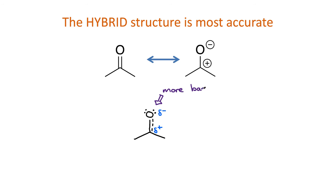Fourth, add partial charges to represent charges that exist in some of the resonance structures. In this case, a delta negative on the oxygen atom, and a delta positive on the carbon atom.